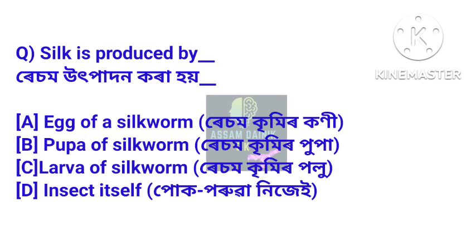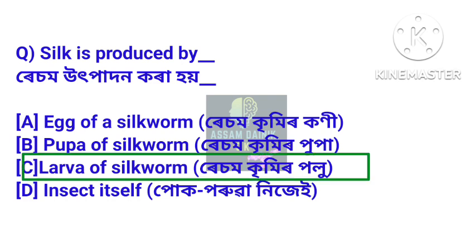Silk is produced by — resam utpadan kora hoi. Answer: larva of silk worm. Resam kirtim polu pre resam ur utpadan kora hoi.